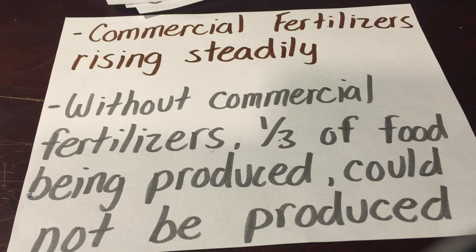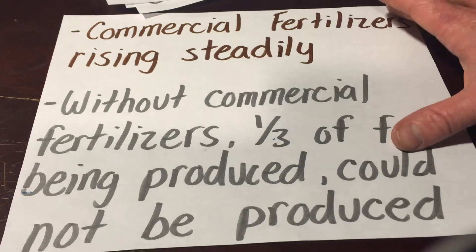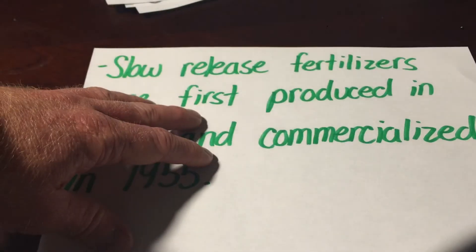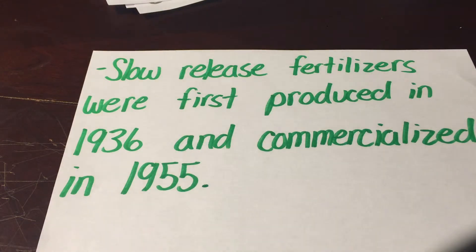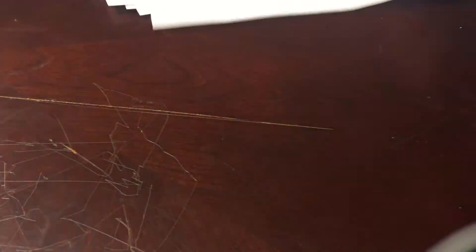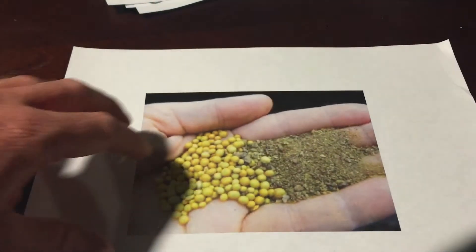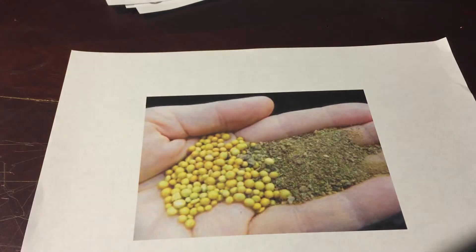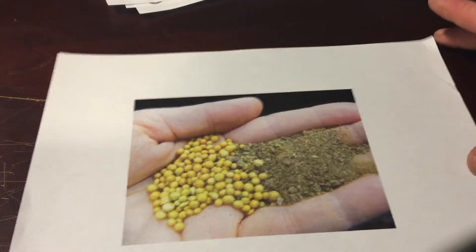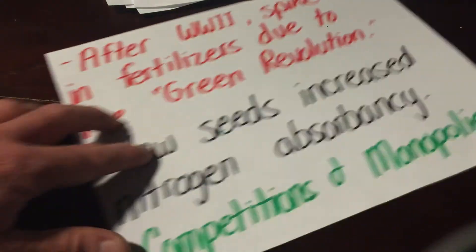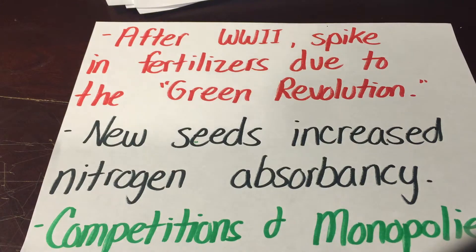Commercial fertilizers had been arriving steadily. Without commercial fertilizers, one-third of all food being produced could not be produced. Slow-release fertilizers were first produced in 1936 and commercialized in 1955. After World War II, there was a big spike in fertilizer use due to the Green Revolution, which was a big increase in agricultural output across the world.